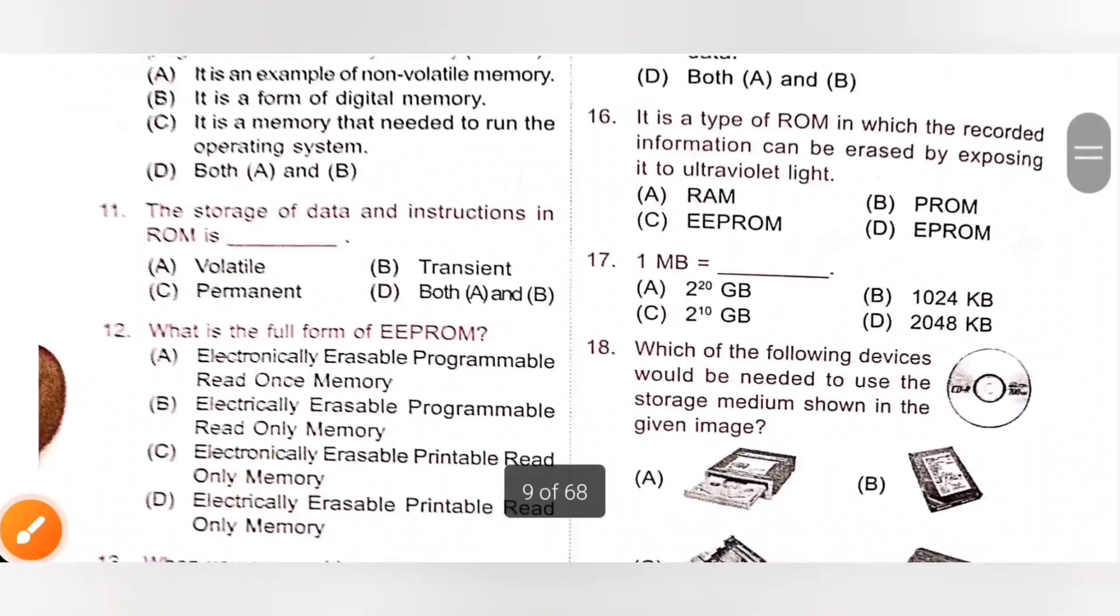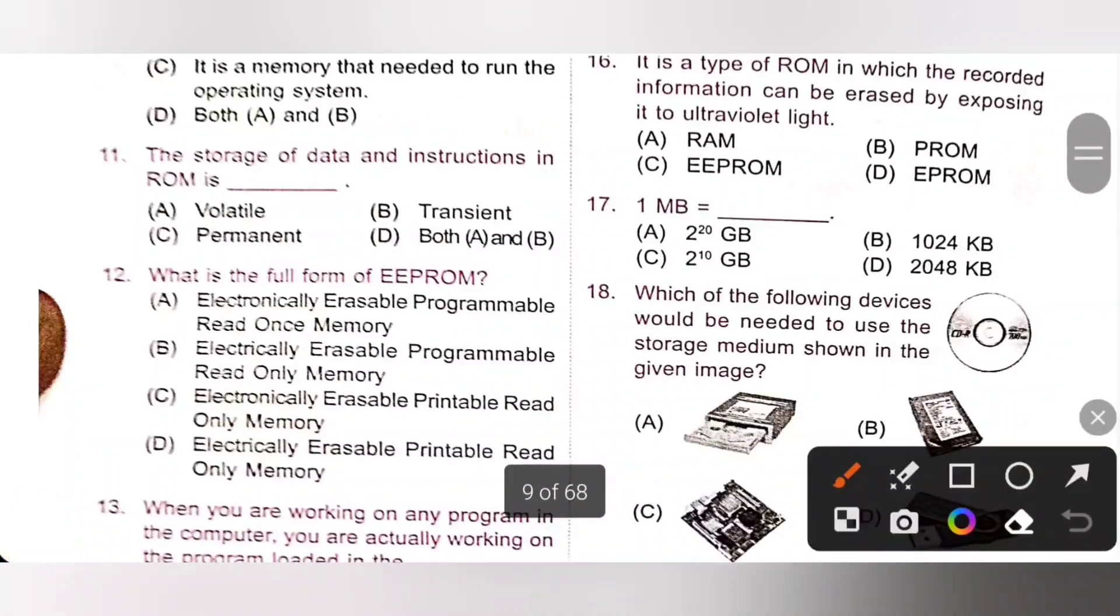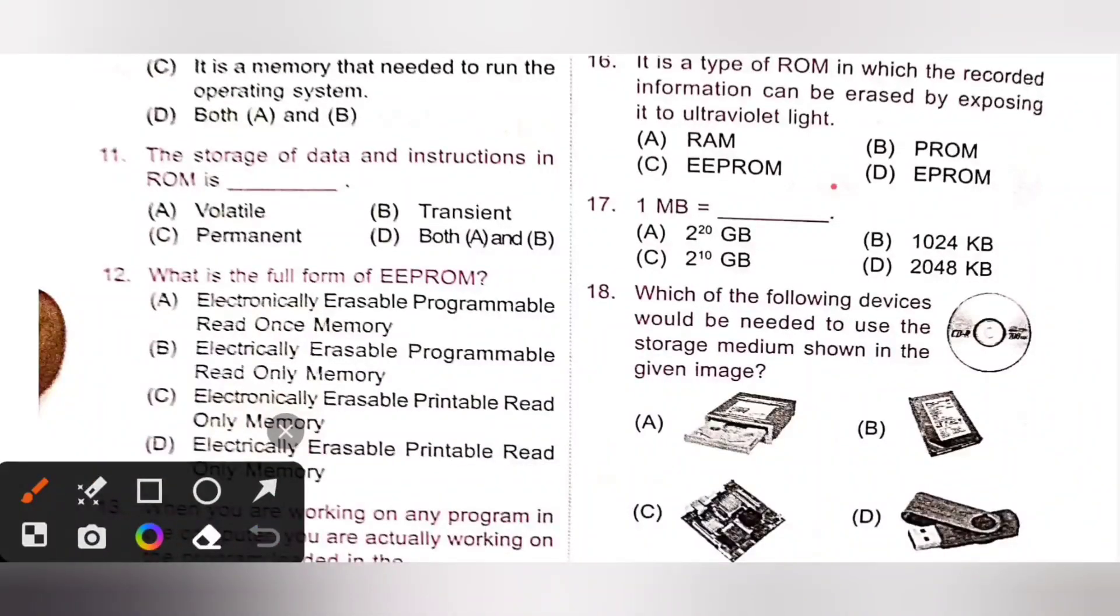Next is 16th. It is a type of ROM in which recorded information can be erased by exposing it to ultraviolet light. That is erasable PROM, EPROM. So the information can be erased by exposing it for some time to ultraviolet light. Option D is the correct answer.